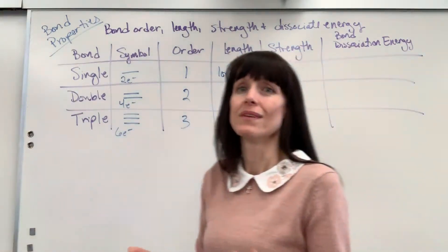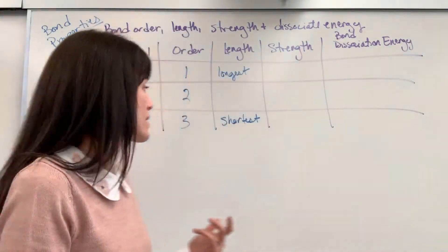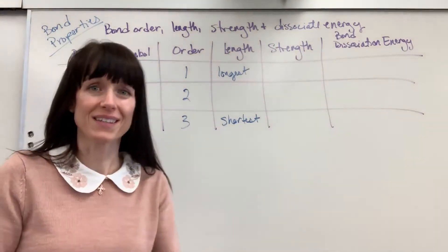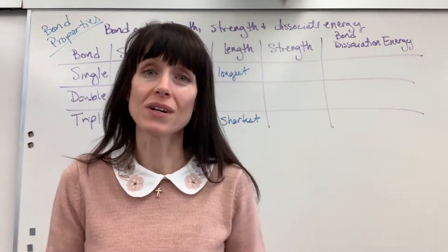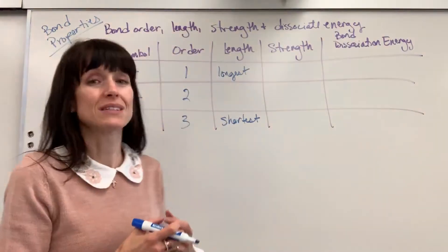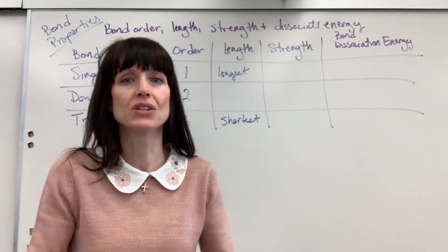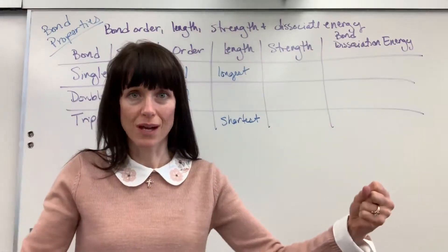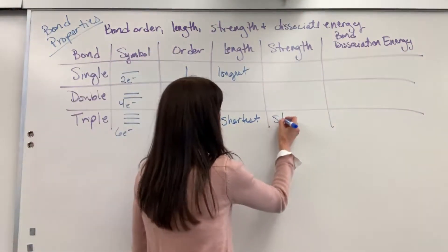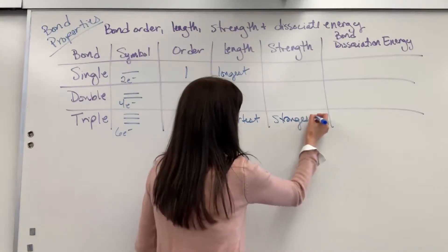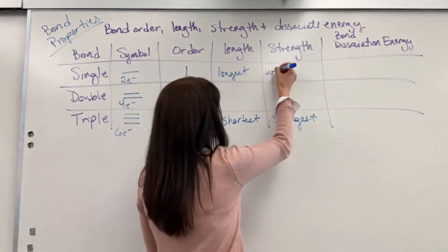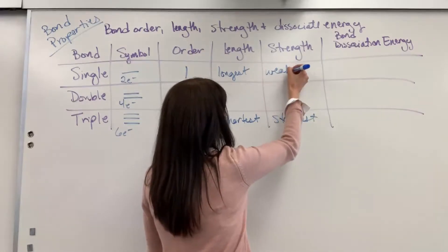Strength. Following that same logic, it is obvious that the triple bond is going to be the strongest. You have six electrons sharing between those two atoms, so it's going to take a significant amount of energy to pull those two atoms apart. The single bond is going to be the weakest.